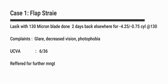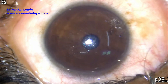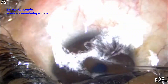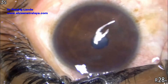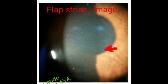In the first case, LASIK was done with a 130 micron blade with Moria microkeratome two days back, and the patient complained of glare, decreased vision, and photophobia following LASIK. On evaluation, flap striae were noted and his vision was 6/36. We did a topography for this patient which confirmed the macrostriae on the flap, and similar findings were noted on slit lamp examination.